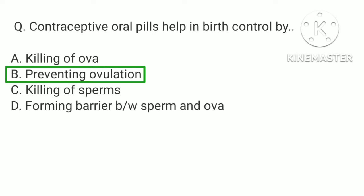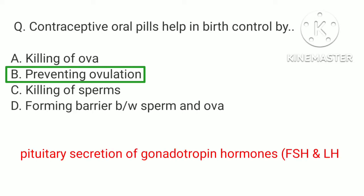Oral pill inhibits pregnancy by preventing ovulation through blocking of pituitary secretions of gonadotropin hormones, i.e. follicle stimulating hormone (FSH) and luteinizing hormone (LH).